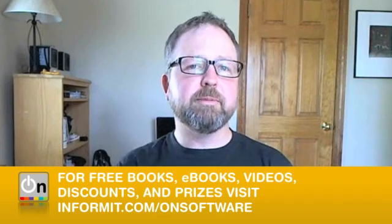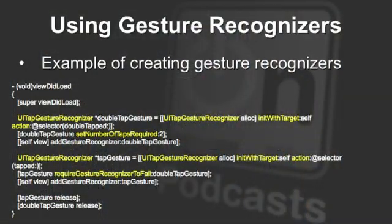For example, let's say that you wanted to detect a double tap within your view. What you would do is you would create a UI tap gesture recognizer. Prior to adding it to the view, you would set the number of required taps to two.